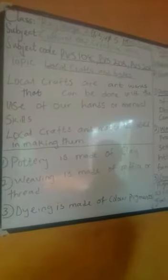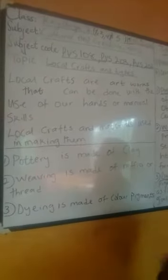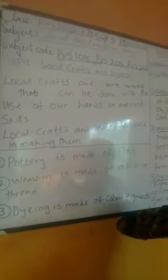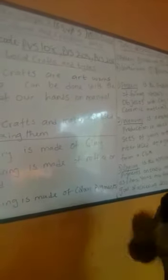Next we have dye. Dye is made of color pigment. You've heard of tie-and-dye, right? The reason it's called tie-and-dye is that you have to tie a part of the cloth before you apply the dye to it, which creates a lovely color pattern on your material.